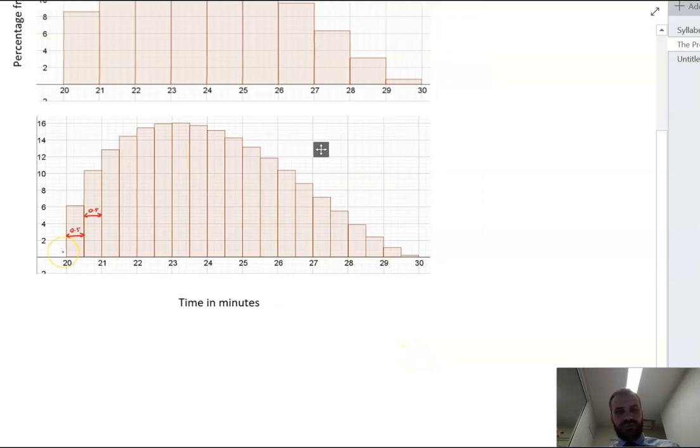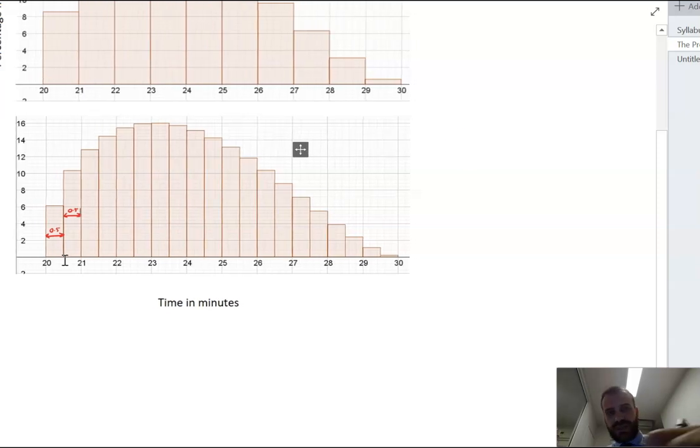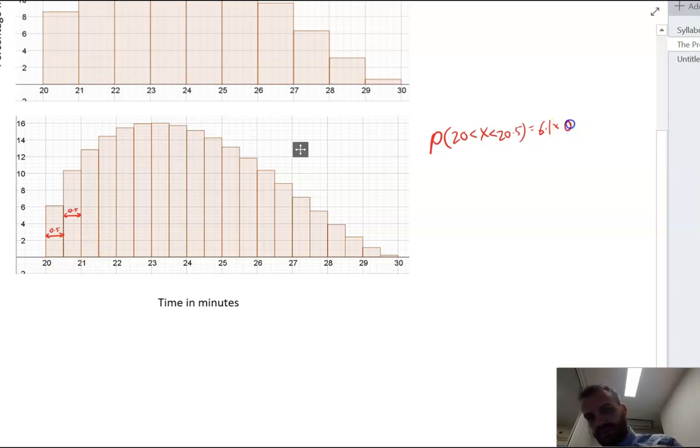So here's my calculation. The probability of running between 20 and 20.5 is going to be equal to the height. So it's about 6.1, let's say, 6.1 times the bin width, 0.5. And that's going to be 3.05. So there's a 3.05% chance that a student runs between 20 and 20.5.